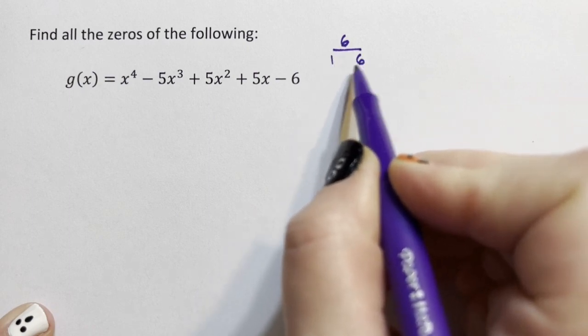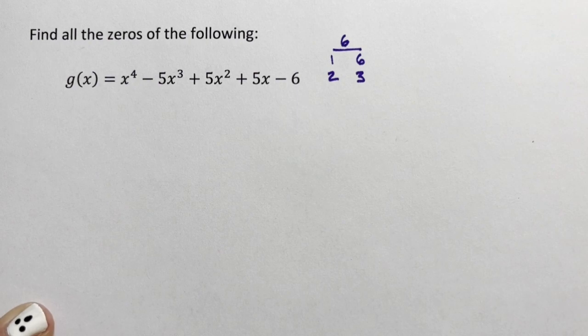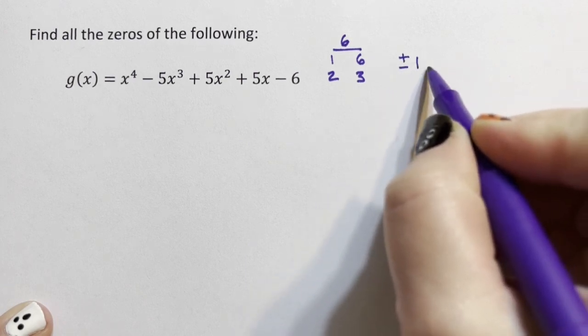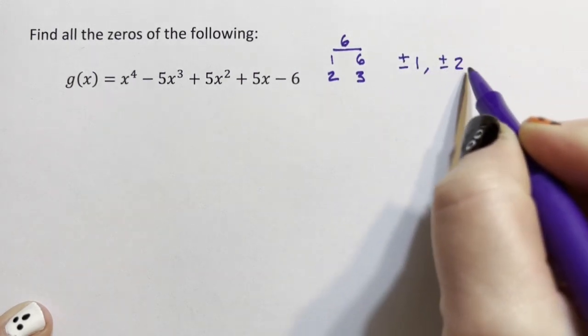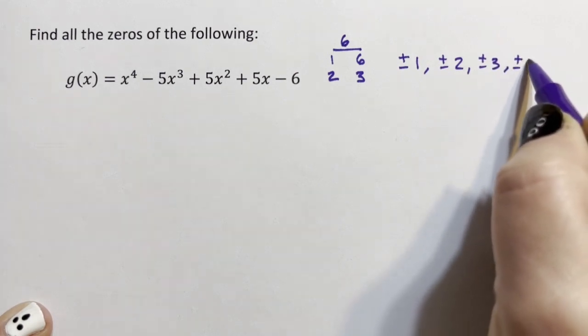So if we look at 6, the factors are 1 and 6, 2 and 3. And our leading coefficient is just 1. So our factors are plus and minus 1, plus and minus 2, plus and minus 3, or positive or negative 6.